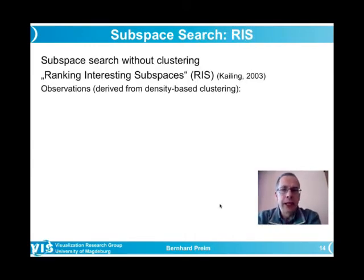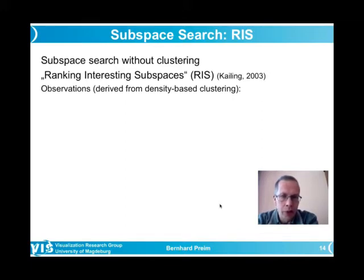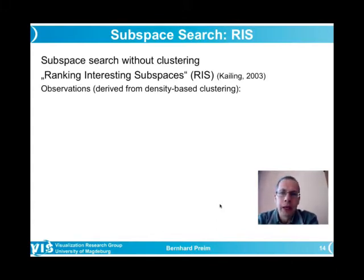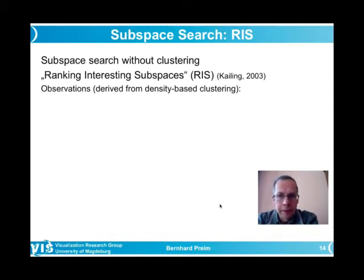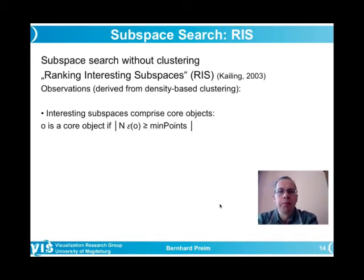The Ranking Interesting Subspaces (RIS) algorithm from Kailing, from Hans-Peter Kriegel's group, is important and relates to density-based clustering. It shares parameters with DBSCAN: min_points — the minimum number of points a cluster should have — and epsilon, which determines whether two points belong to the same cluster based on distance.